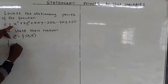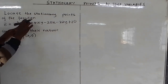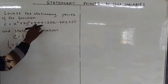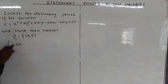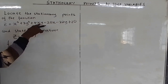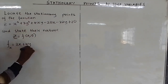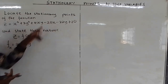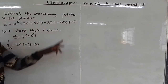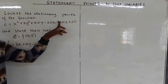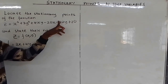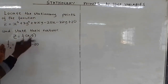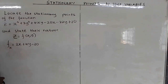Differentiating x² gives 2x. For 3y², there is no x, so it is a constant and differentiates to 0. For 4xy, 4y is a constant, so differentiating x gives 1, leaving plus 4y. For -20x, differentiating x gives 1, so we get -20. For -32y, there is no x, so that is a constant giving 0. The constant 20 also gives 0. So ∂z/∂x = 2x + 4y - 20.